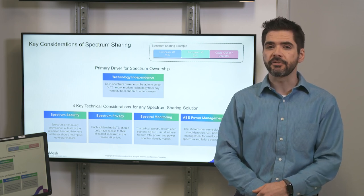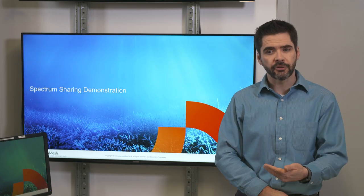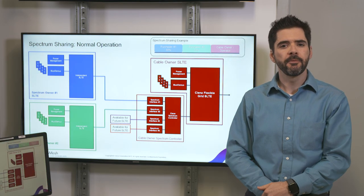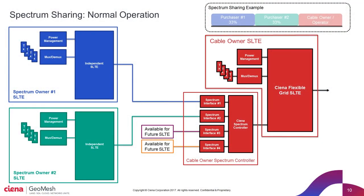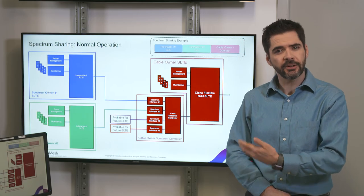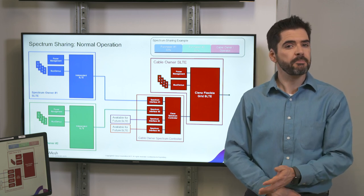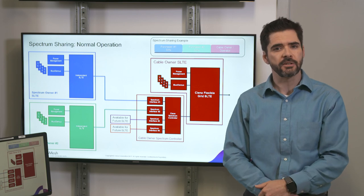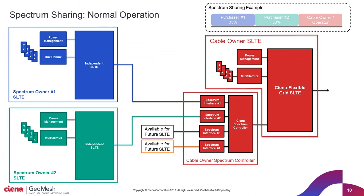Now that we have covered these key considerations, let's look at the terminal configuration we are using for this demonstration. The cable owner deploys a standard flexible grid SLTE, highlighted in red. This SLTE provides direct spectrum access for the cable owner along with the ASE power management function needed for spectrum sharing. In addition to the standard SLTE, the cable owner then adds a spectrum controller, which will provide the spectrum security and spectrum privacy functions.